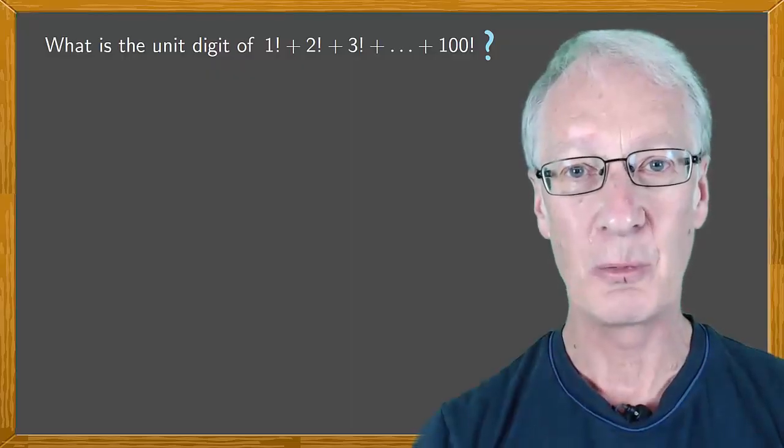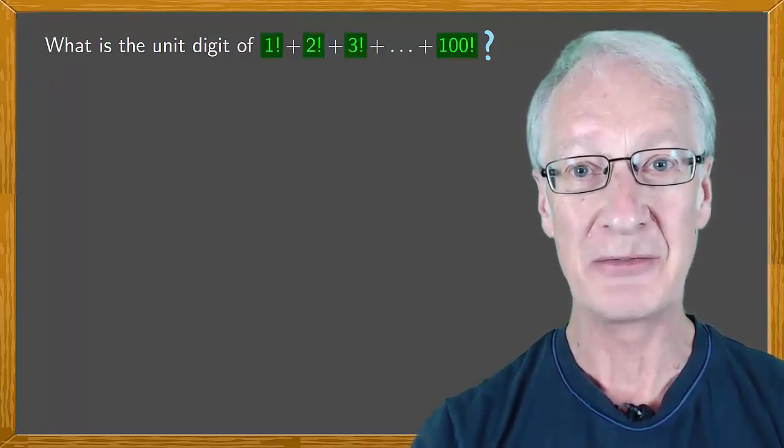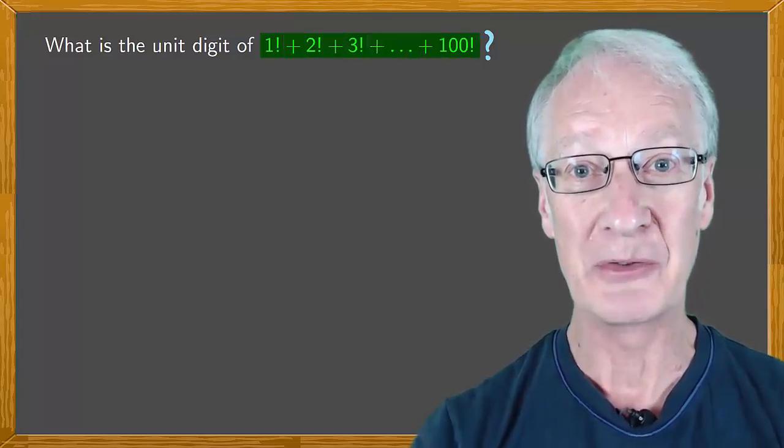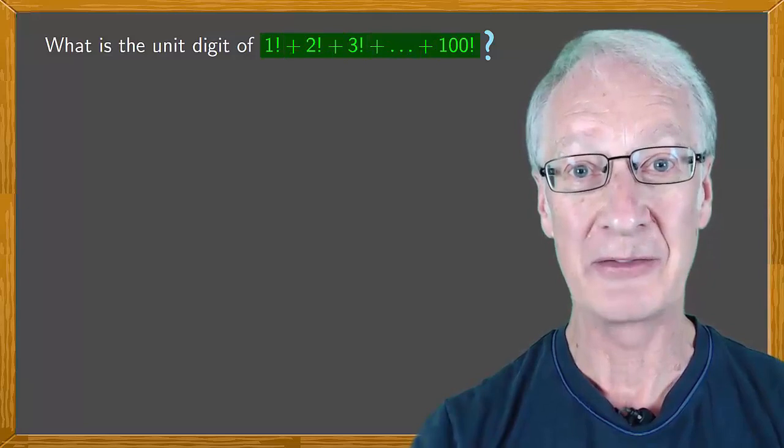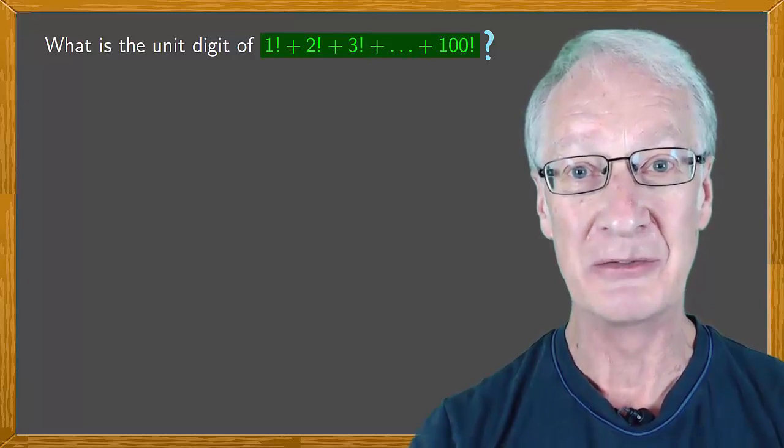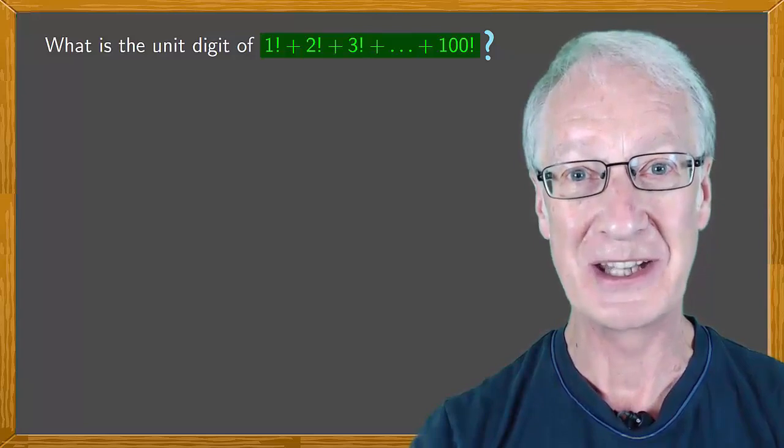Well clearly one way to do this would be to calculate the factorials of the first 100 natural numbers, work out the sum of those and then we would have the unit digit, but very obviously that would take a long time, would be very laborious and in any case there is a much better way.